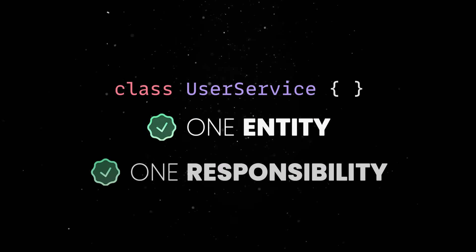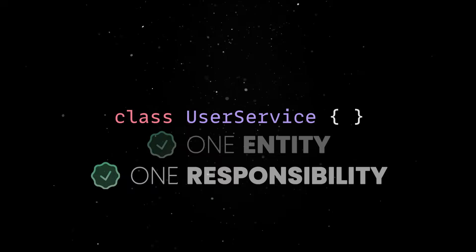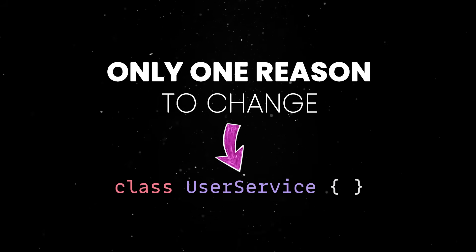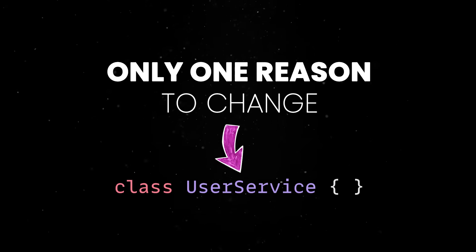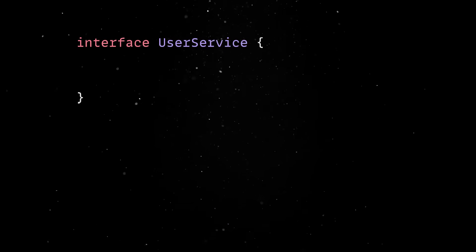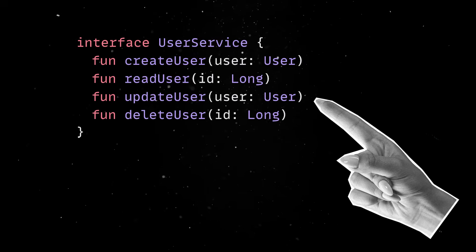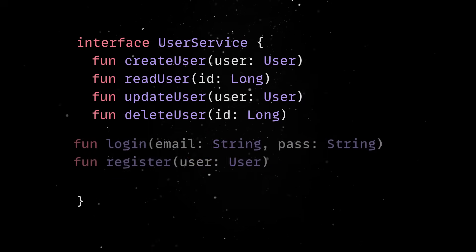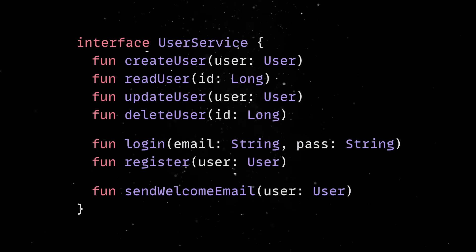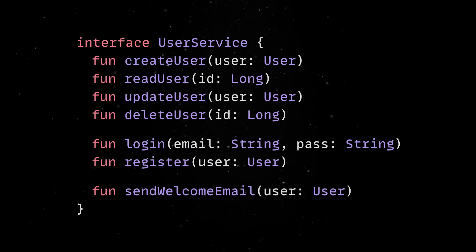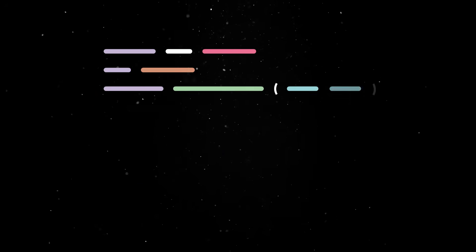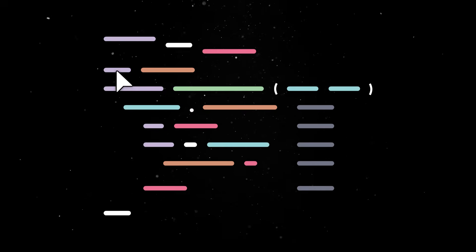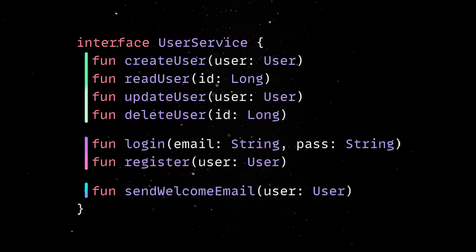Single Responsibility is one of the simpler principles of SOLID. The name is pretty self-explanatory, and it all boils down to designing your entities so that each one focuses on a single, well-defined responsibility. The idea is that if something changes, there's only one reason it should impact a particular class. In practice, a user service class tends to start with only CRUD operations, but slowly grows to contain all kinds of related business logic. If you find yourself constantly changing the same class for completely unrelated reasons, it's a sign it might be taking on too much. So break it down into smaller, more focused pieces.